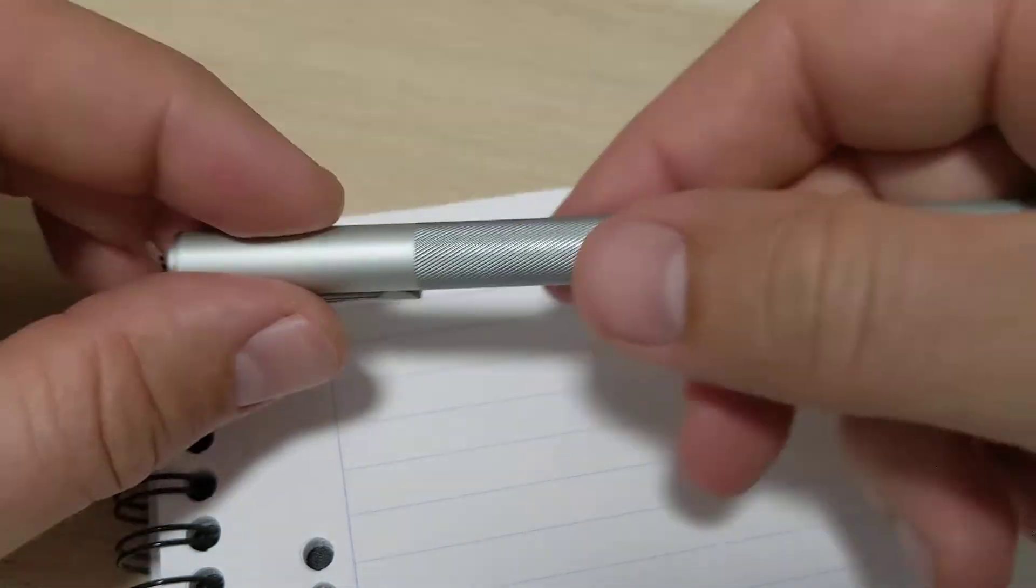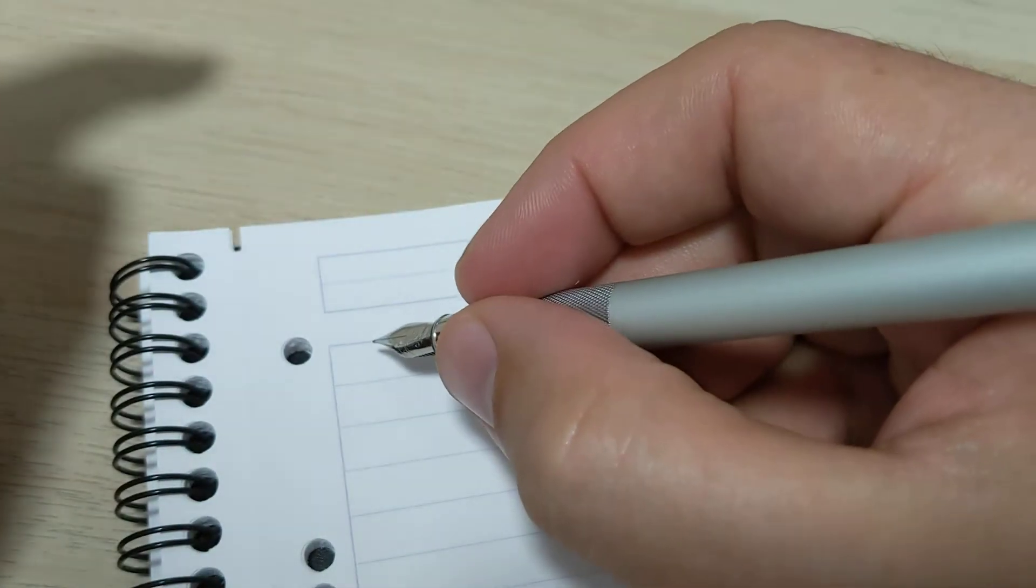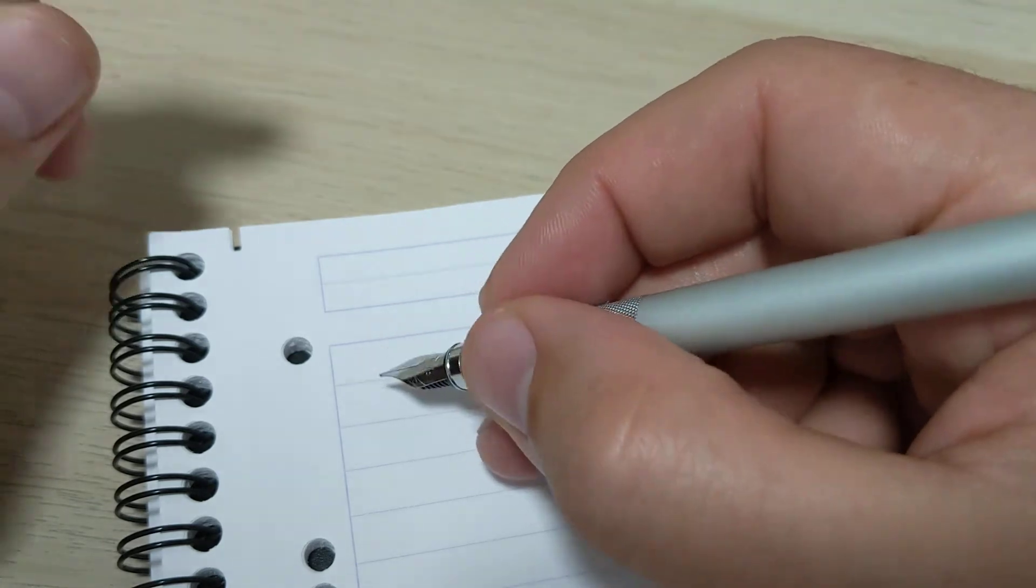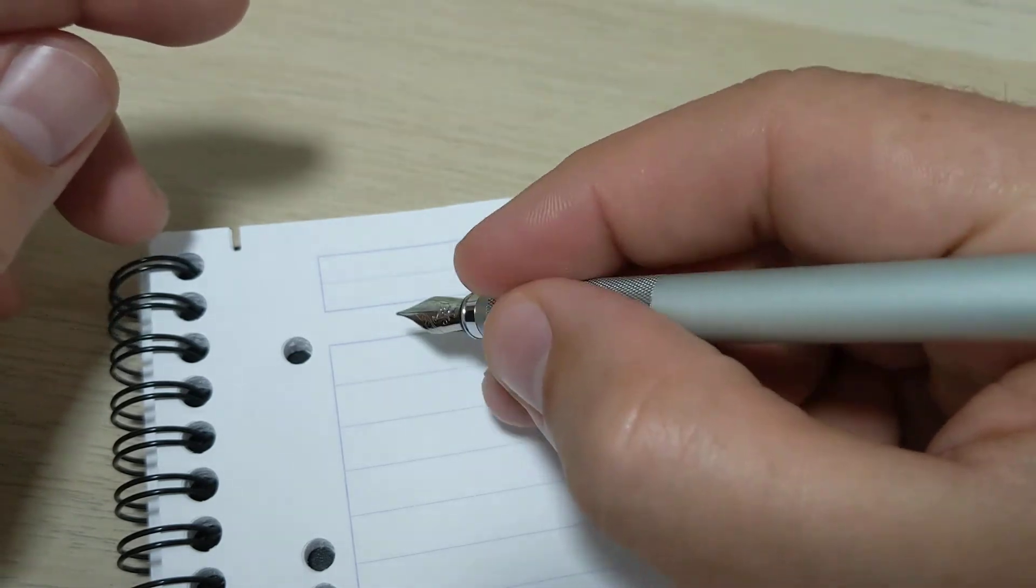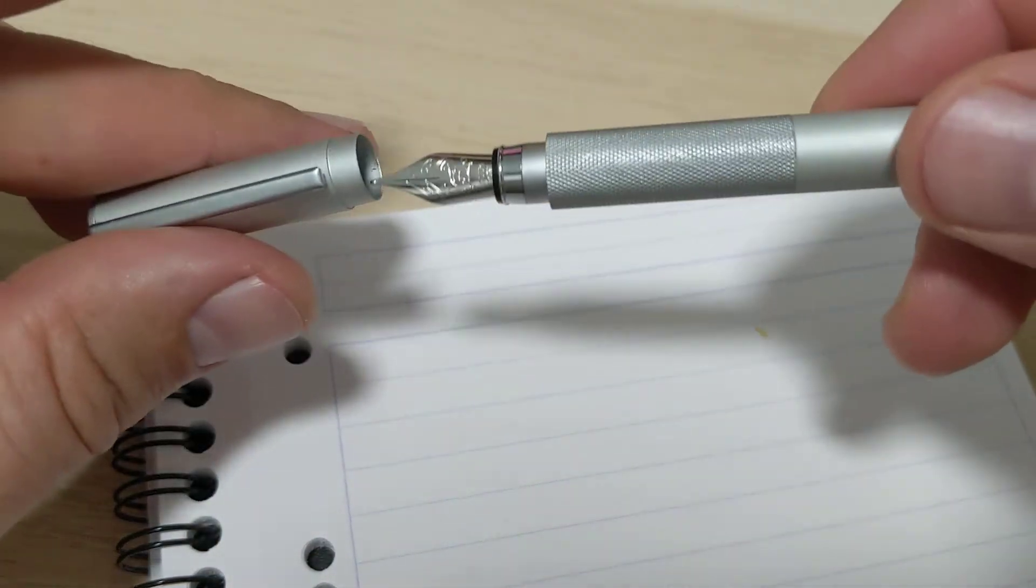The design's nice, very simple. Got some nice knurling here for a little bit of grip. Pet peeve of mine is having a great fountain pen, you'll love the looks, you'll love how it writes and everything else, but the grip is really slick. It's just kind of tough to write with. You're always having to focus on your hand not slipping off. So that's a nice feature.